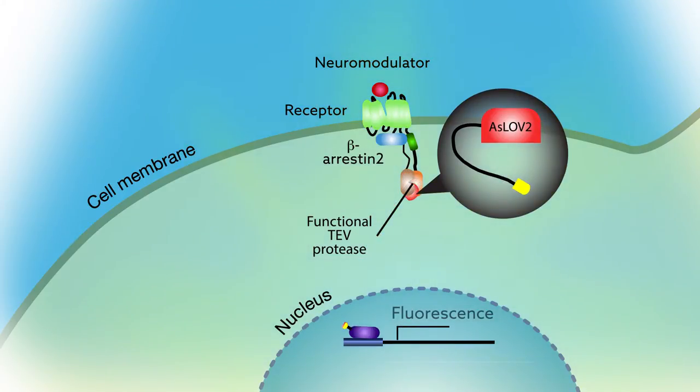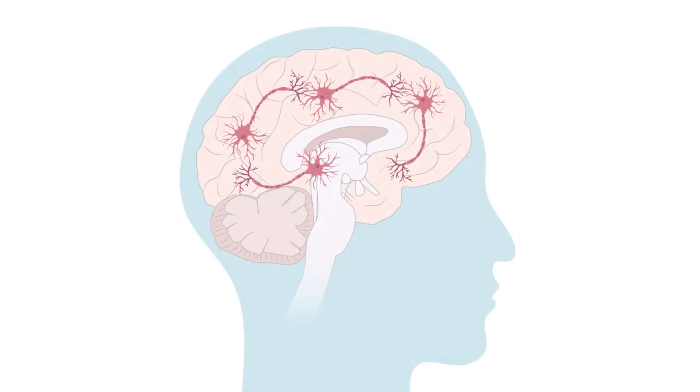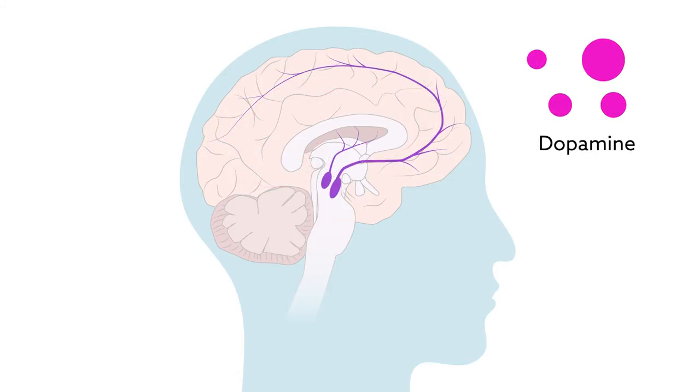The researchers demonstrated the advantages of the improved sensor system by using it to identify the cells involved in reward-based learning. This form of learning depends on the well-known neuromodulator dopamine, which is released in anticipation of rewards like food or praise.